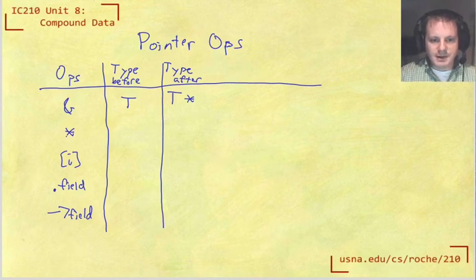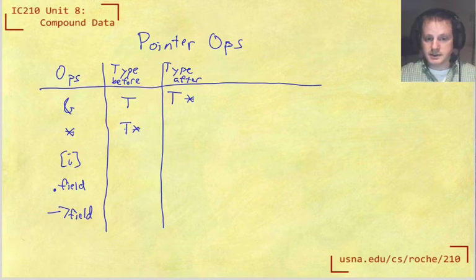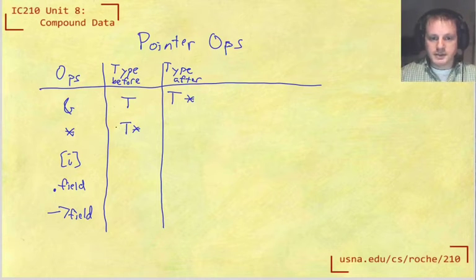Okay, this is the dereference operator. What does that do? That goes from a pointer to something. And again, T, I'm just writing T for any type. So there's a pointer to anything. And it takes away that pointer from the type. So it becomes just the original thing.